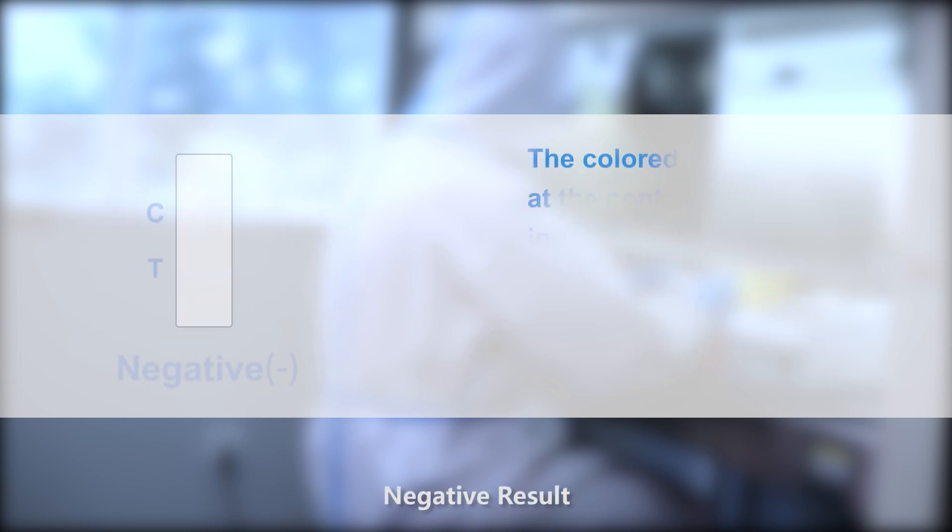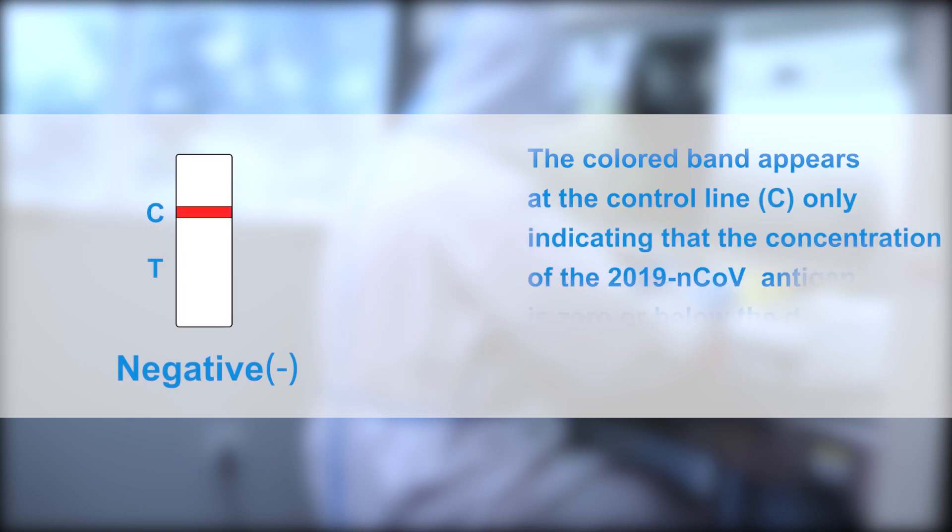Negative results: The colored band appears at the control line C only, indicating that the concentration of 2019 novel coronavirus antigen is zero and below the detection limit of the test.